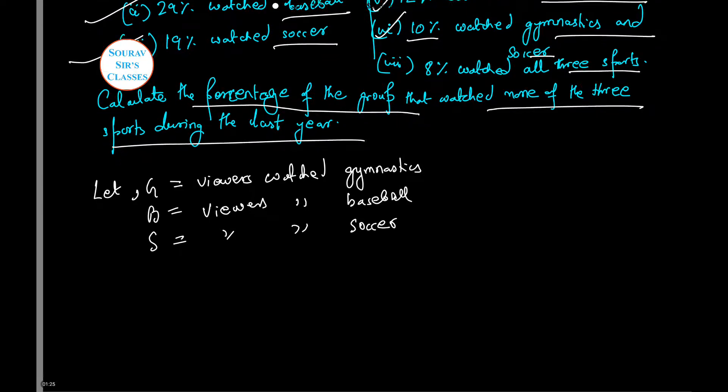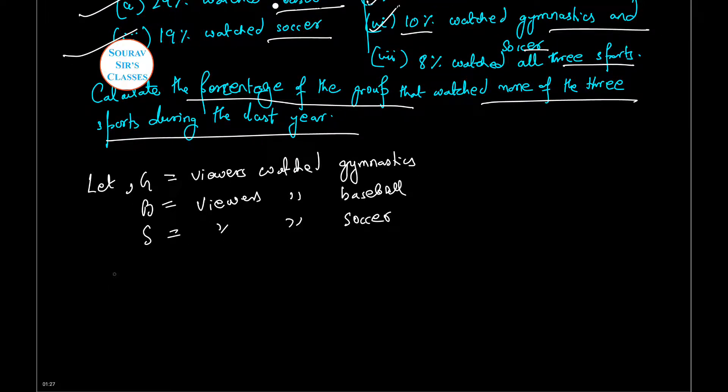Then we need to find the set or the percentage of the probabilities, g union b union s, that is all three viewing number of people, their complement. That is, this equals 1 minus probability of g union b union s. Now let us write this by expanding the probability.